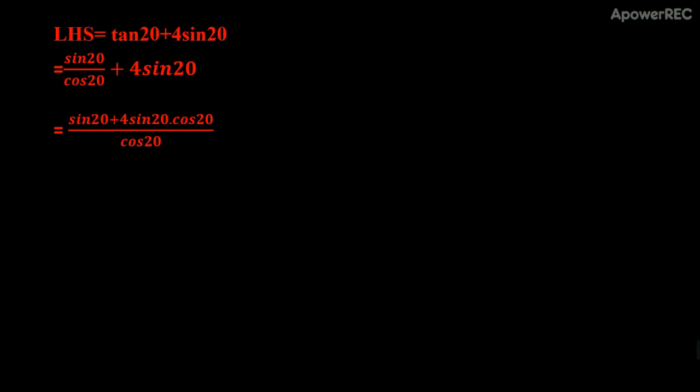By taking the LCM as cos(20°), we combine the terms: sin(20°) + 4sin(20°)·cos(20°), all over cos(20°). We can write 4 as 2 × 2, giving us sin(20°) + 2 · 2sin(20°)cos(20°), over cos(20°).